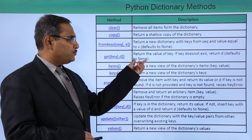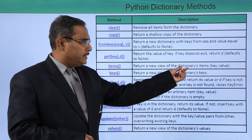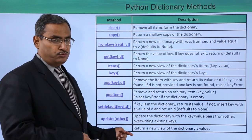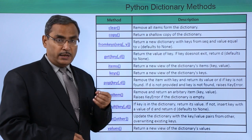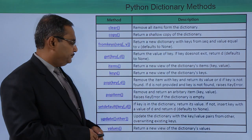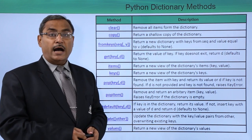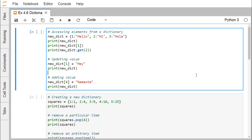The items() method returns a new view of the dictionary items, that is the key and value pairs. These are the different methods with their respective descriptions. We have a plan to show you all these useful methods in our live demonstration. Let us go for the demonstration for better understanding of how these methods can be used on dictionary objects and what results we get.